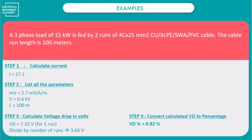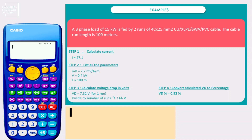Now let's go to a practical calculation example. We have a three-phase load of 15 kW connected using two runs of 4-core 25 mm² cable, with a cable run length of 100 metres. Step one is to calculate the rated current.